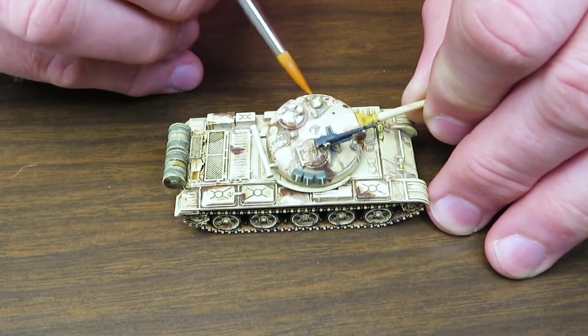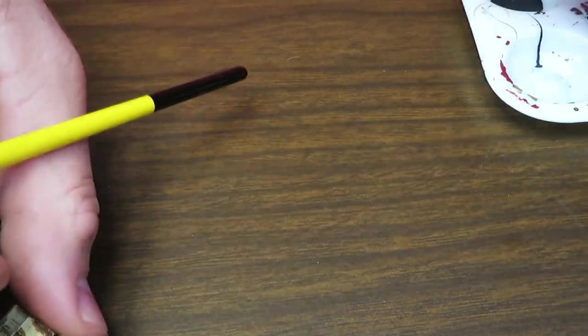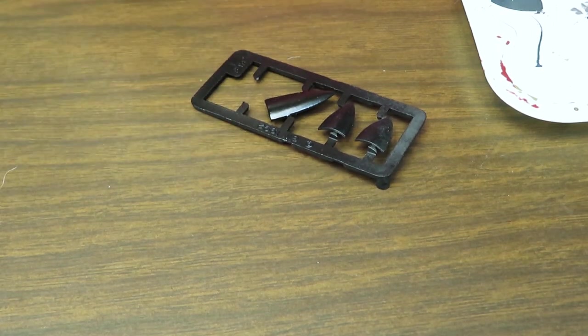So I'm just going to put this roughly on this turret right about where I think that decal is going to go and then we're going to set that to the side and let it dry while I show you how to put it on this flat shield.